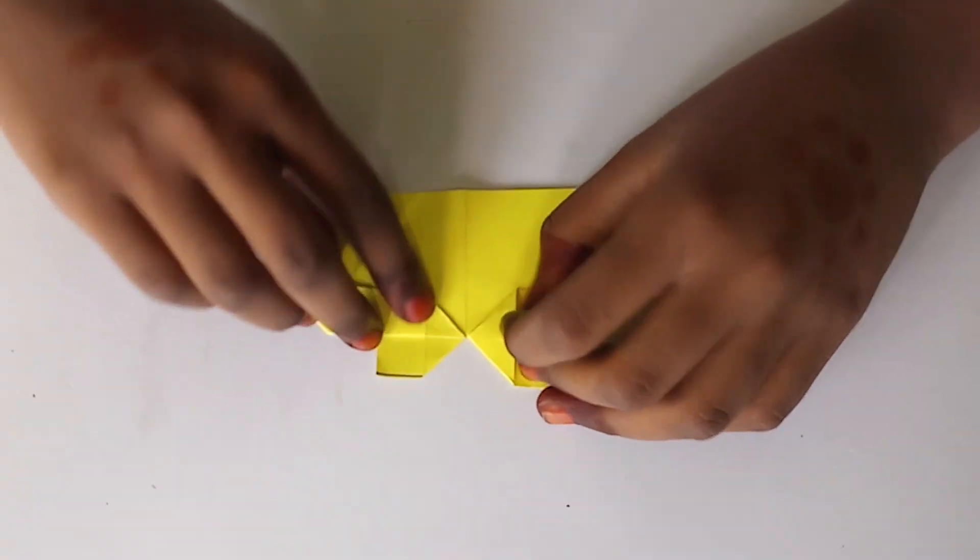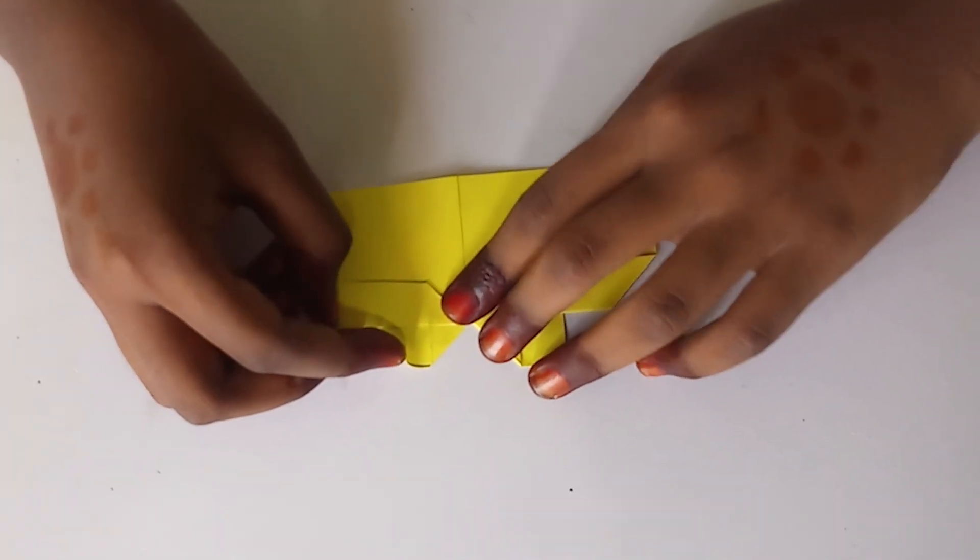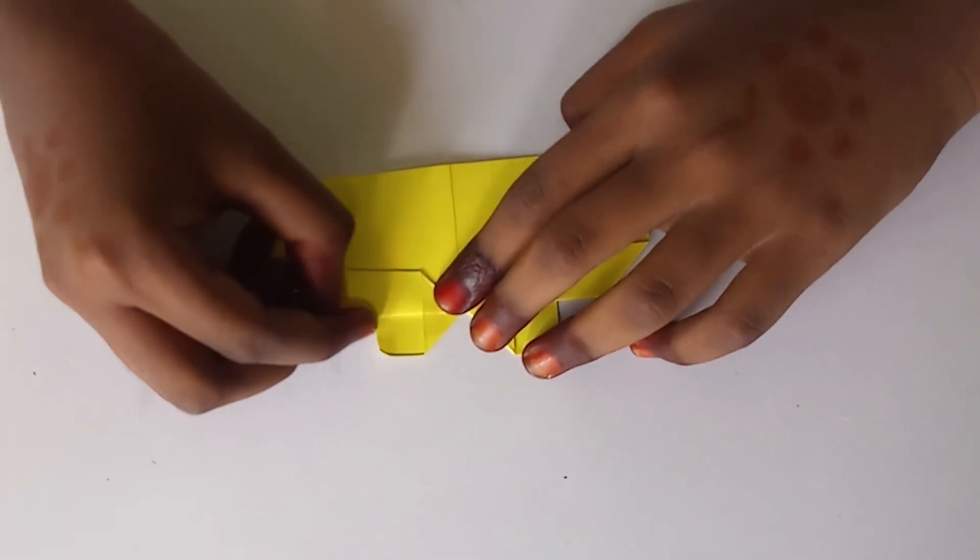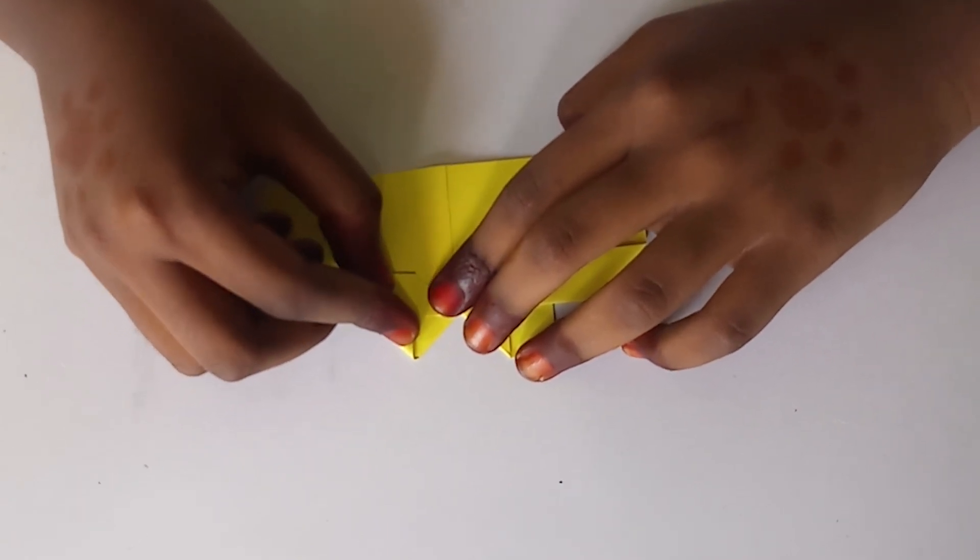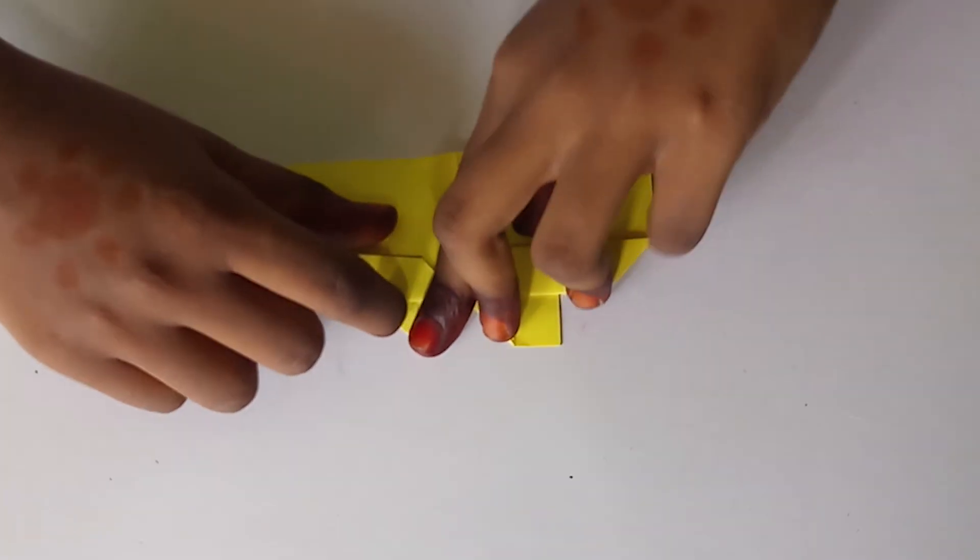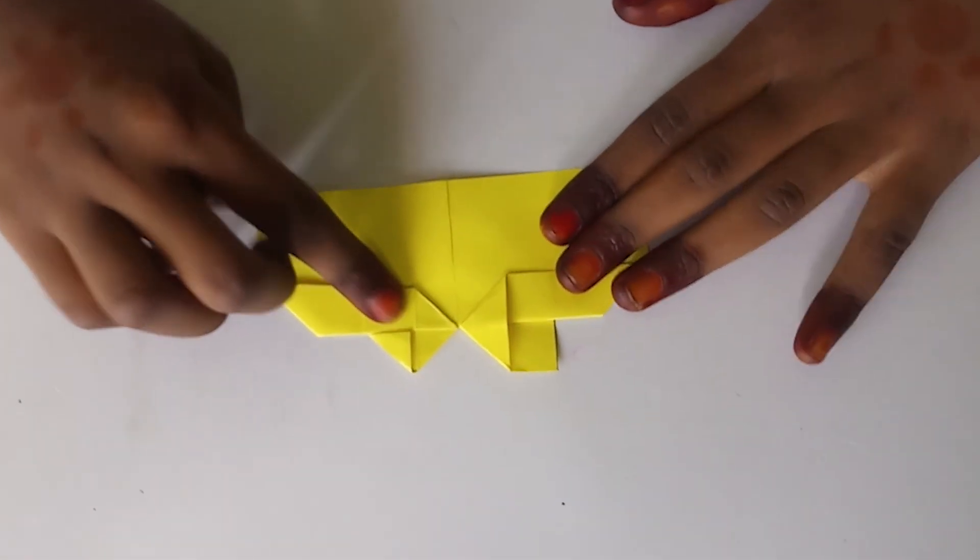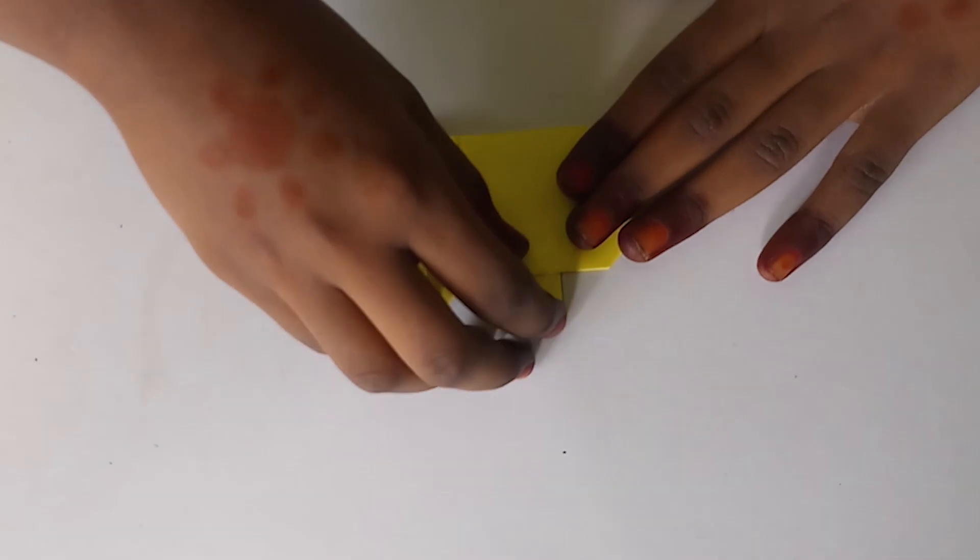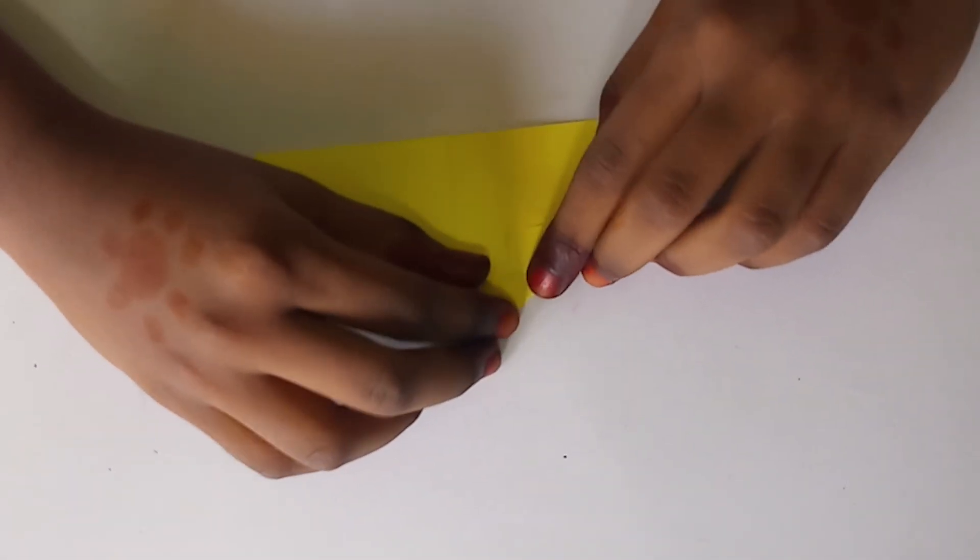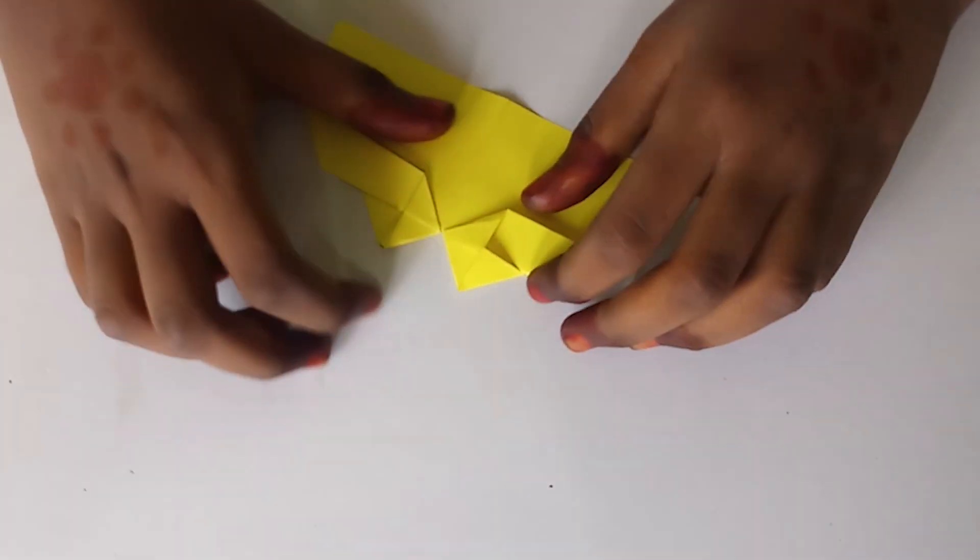Make sure it should be straight. Now, take this corner and fold it like a triangle shape. Like this. Do it on the opposite side also.